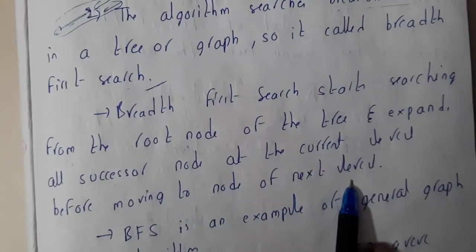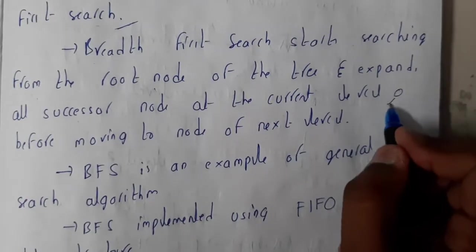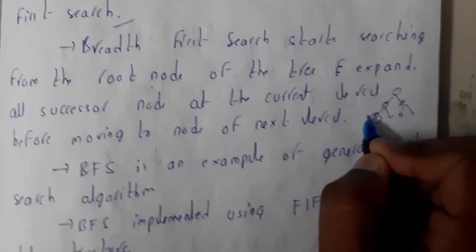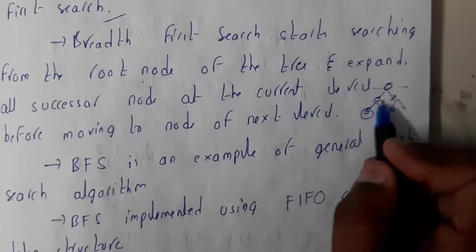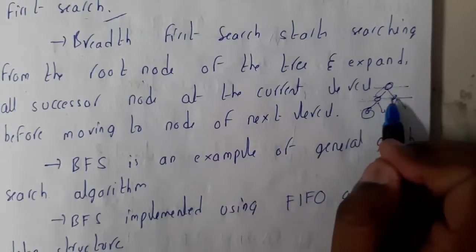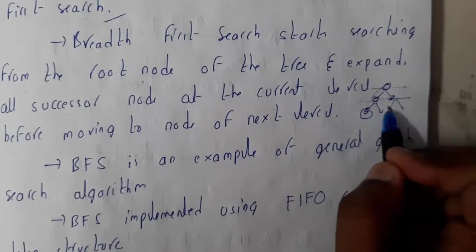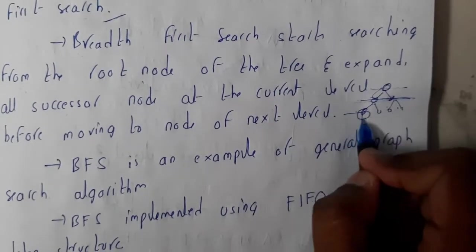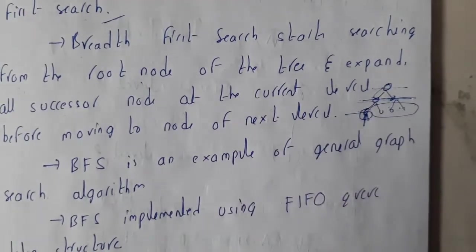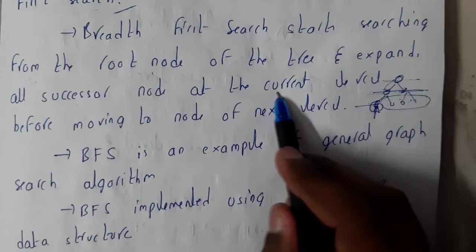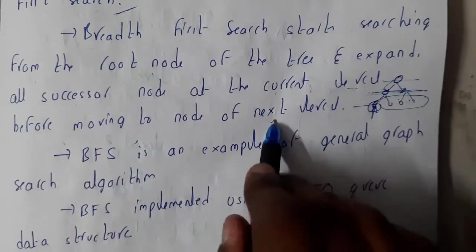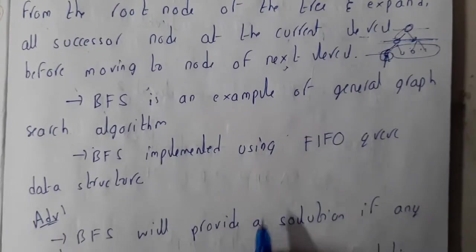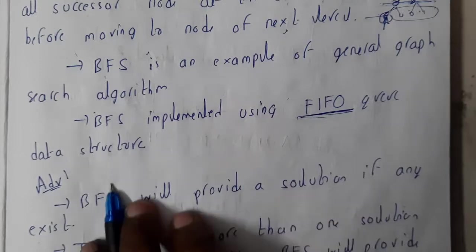Breadth first search starts from the root node of the tree and expands successive nodes at the current level before moving to the next level. So if this is your tree and this is your goal node, you will analyze the first level, then come down and analyze the complete next level. You will not skip levels - you analyze the whole level, then move down until you find your goal node and stop. BFS is an example of a general graph searching algorithm, and it uses the concept of FIFO.